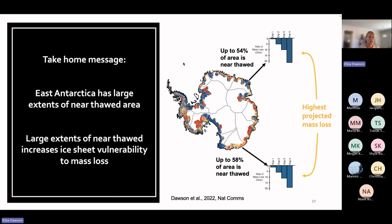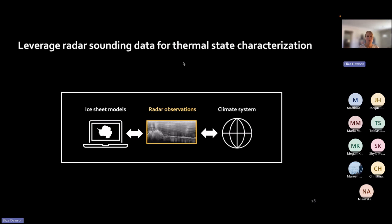Why is East Antarctica so vulnerable to thawing? It has more near-thawed bed. The two regions with the most near-thawed area — basal temperatures within a few degrees of the melting point — are also the regions with the highest rates of mass loss due to thawing. Parts of East Antarctica could be really important, which brings us to the main focus: these model results motivate that it could be important for understanding mass loss. But can we back this up with observations? For that I will turn to radar data in this area to leverage it for thermal state characterization.